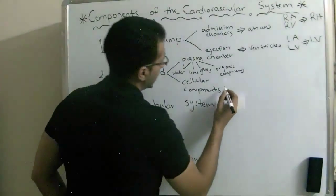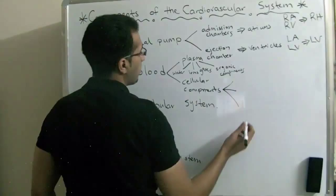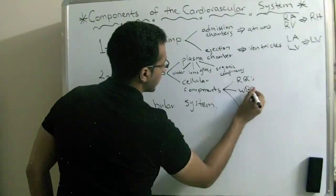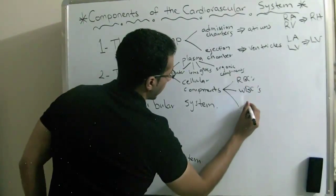And for the cellular components they're divided into three parts which are red blood cells, white blood cells, and platelets.